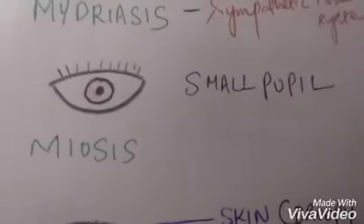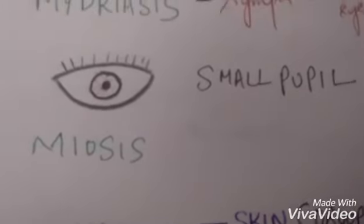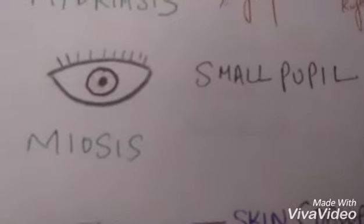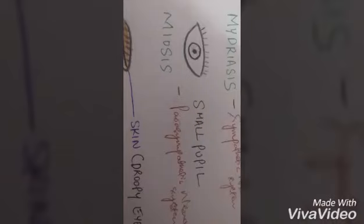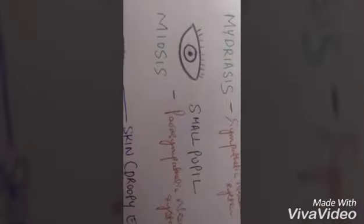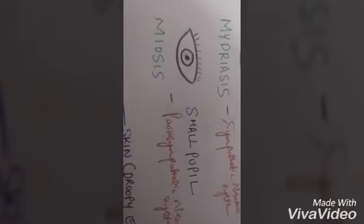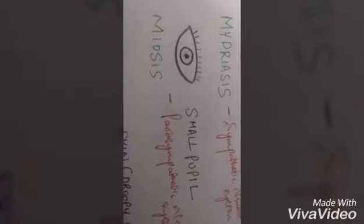Now let's talk about meiosis. What is meiosis? Meiosis is the small pupil. The pupil gets small, and this is caused by the parasympathetic nervous system. Here there will be constriction of the pupil.